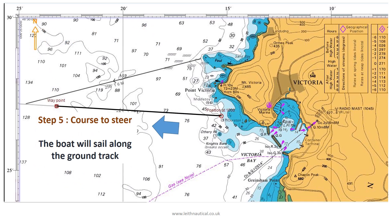By following our course to steer that we have calculated, the boat will sail along the ground track from our start position to our destination. Had we not done this, the tidal stream would have taken us some considerable distance away from our intended destination — and this is why we do a course to steer.